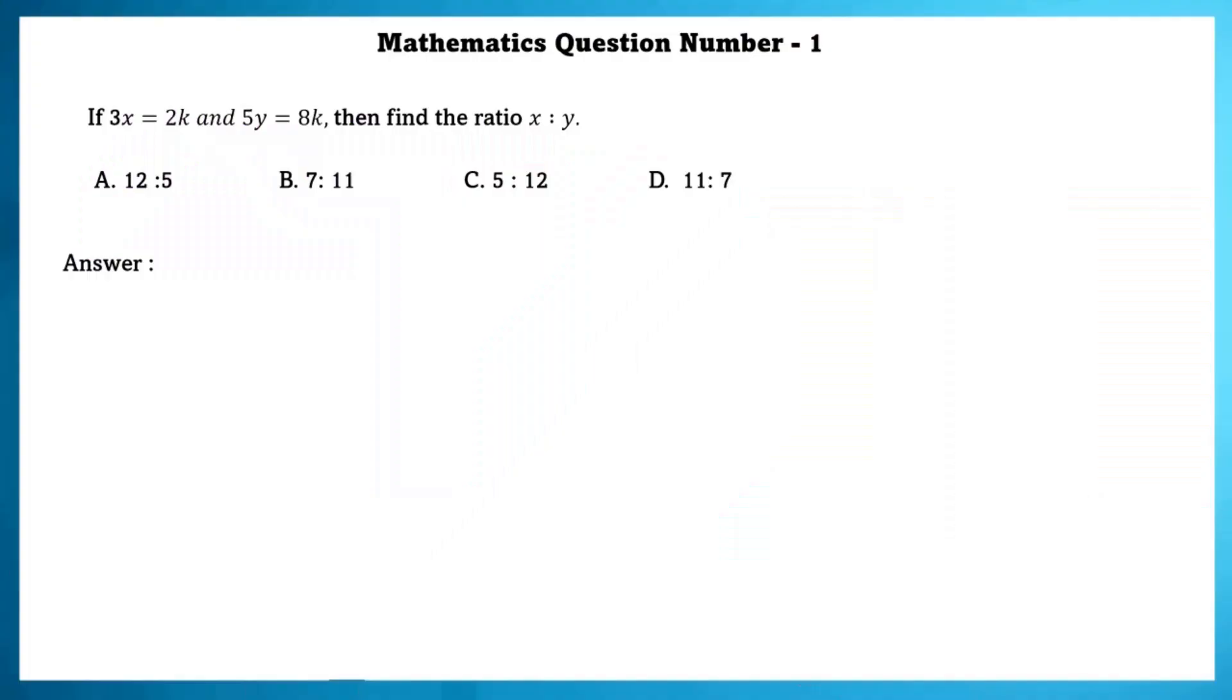Class 6 level 2 IMO. Mathematics question number 1. If 3x is equal to 2k and 5y is equal to 8k, then find the ratio of x is to y.